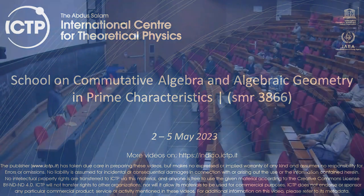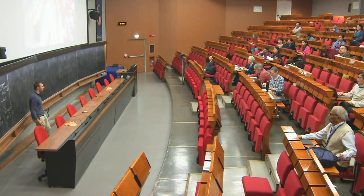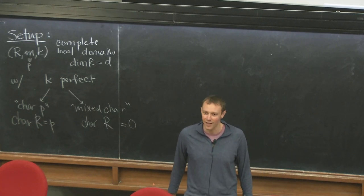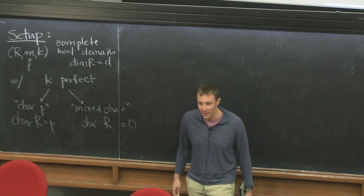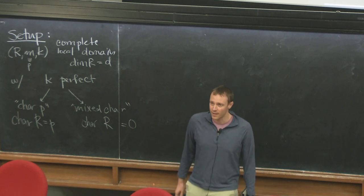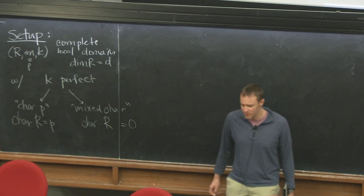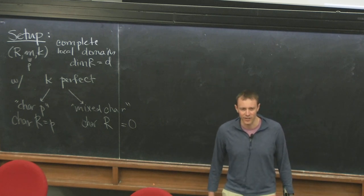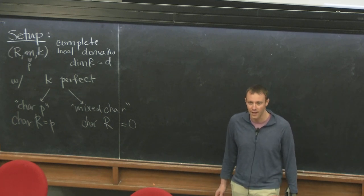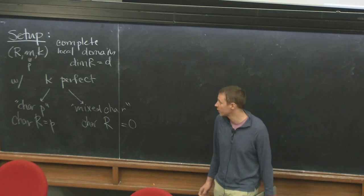Just an overview of today's talk. I want you to have the impression that we have done all this work to build up the basic objects that I need to start anew. So what we showed last time, we sketched the proof of André's theorem, that BCM algebras exist for any complete local domain. The point of today's talk is to talk about the ways in which we can now use them to mimic things from positive characteristic in mixed characteristic, and look at F-singularities from this point of view.